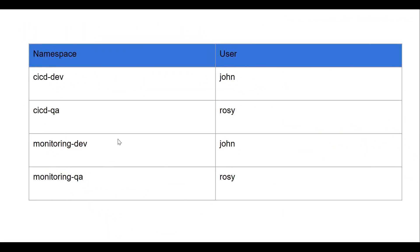For this demo I will use these details. I have already created the namespaces cacddev, cacdqa, monitoringdev, and monitoringqa — four namespaces. I have already set up two users: John is a developer and will access cacddev and monitoringdev namespaces. Roji is from the QA team and will have access to cacdqa and monitoringqa. I have already set all these permissions via RBAC — how to set up a user and assign permissions was discussed in the previous video.